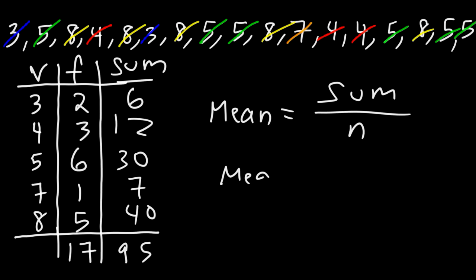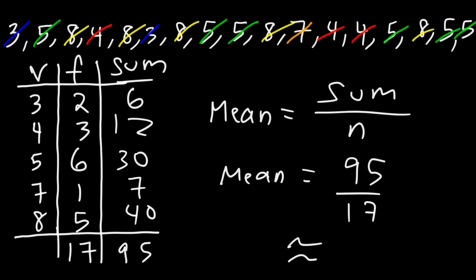So 95 is the total sum of all the numbers in this set, and there are 17 numbers. So 95 divided by 17 is going to give us a mean of approximately 5.59. And so that's how you can calculate the mean using a frequency table.